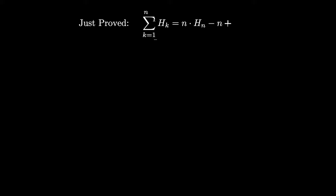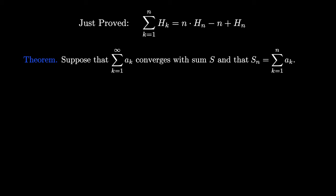A theorem due to Ernesto Cesaro says that if we have an infinite series that converges with sum S, and we consider the sequence of partial sums given by S sub n, then the sequence of average partial sums shown here also converges to the same sum S.